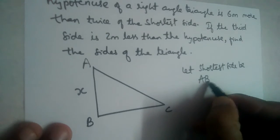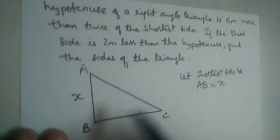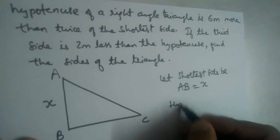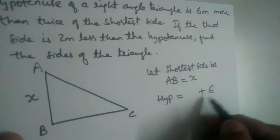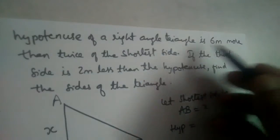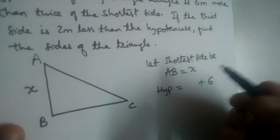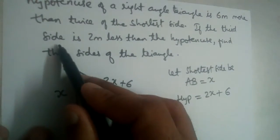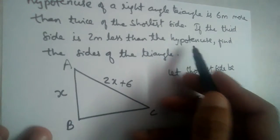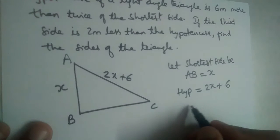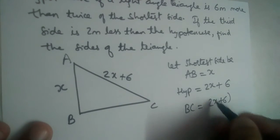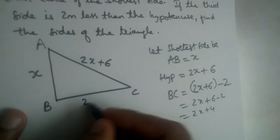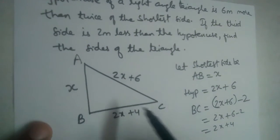Let the shortest side AB be X. The hypotenuse is six more than twice the shortest side, so hypotenuse equals 2X plus 6. The third side BC is 2 meters less than the hypotenuse, so BC equals 2X plus 6 minus 2, which gives us 2X plus 4.